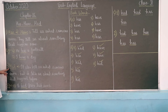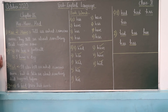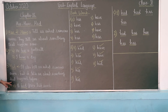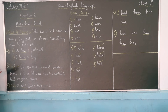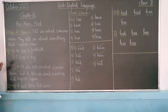Heading number 2 — Had. Had also tells us what someone owns, but it tells us about something that happened before, in the past. There is only one difference between Has or Have and Had.